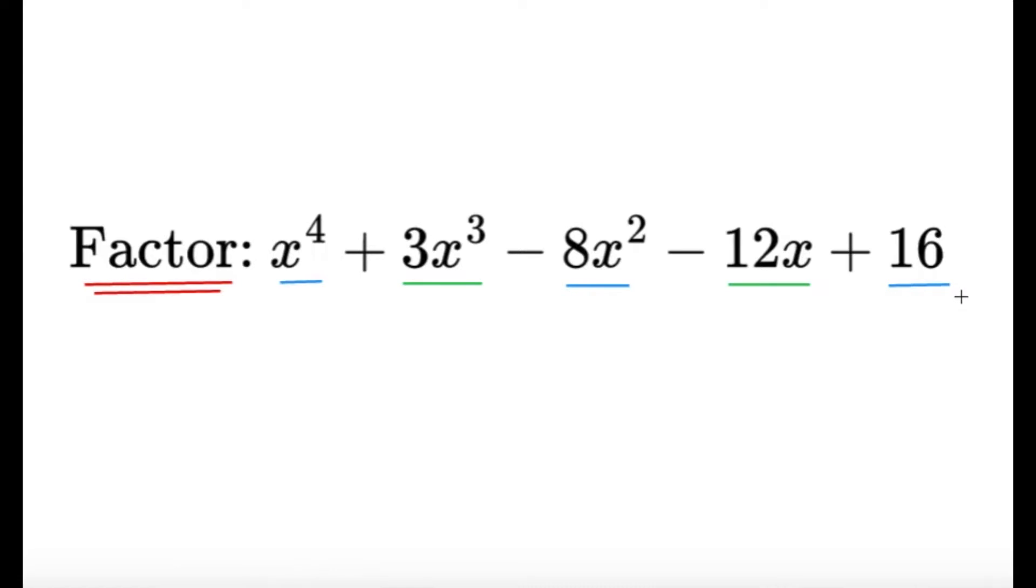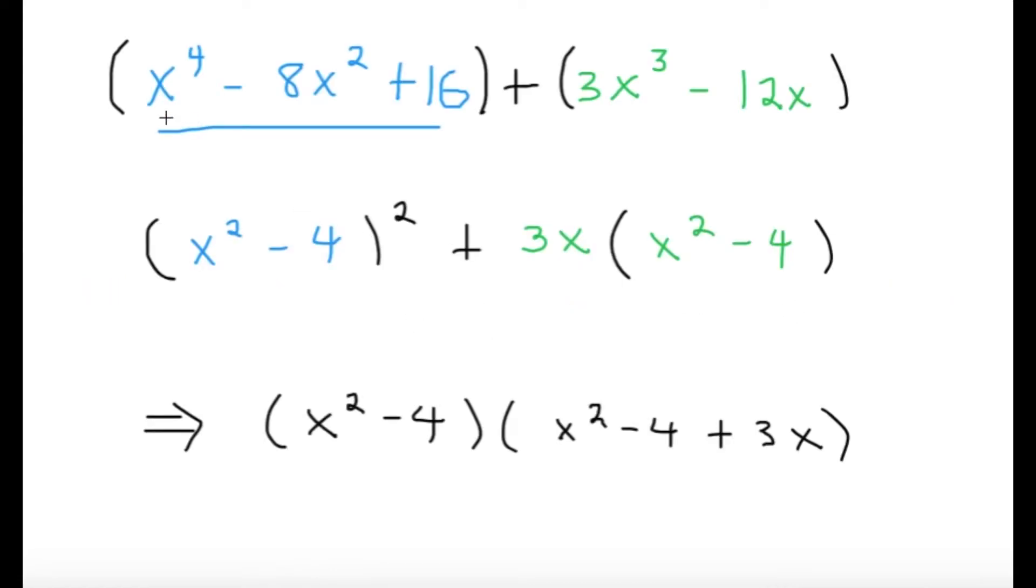So I'll group the blue terms and then I'll group the green terms. I'll have x to the fourth minus 8x squared plus 16, and then 3x cubed minus 12x.